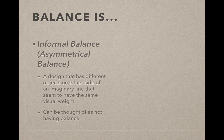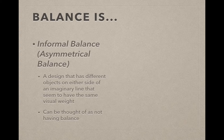If an object is different on either side of that center line, we create what we call informal balance, or asymmetrical balance. It's a design that has different objects on either side of that center line that seem to have the same visual weight.